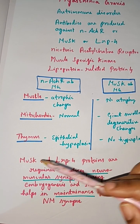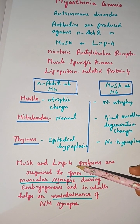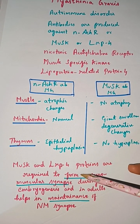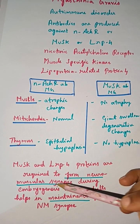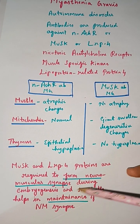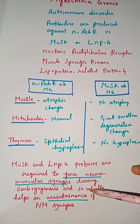MuSK and LRP4 proteins are mainly required to form the neuromuscular synapse during embryogenesis, and in adults they help in maintaining the neuromuscular synapse.